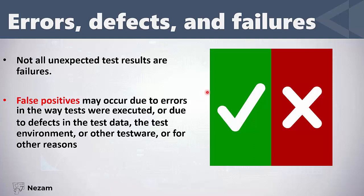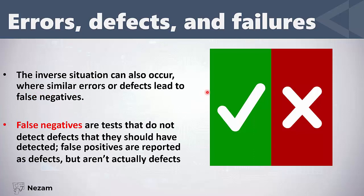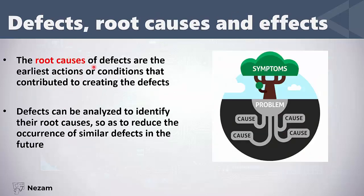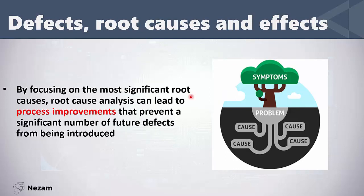On the other hand, there is a false negative — a defect exists but you didn't find it because of a mistake in executing the testing. So: false positive means there is no defect but you detected one due to your mistake; false negative means there is a defect but you didn't find it. The root causes of defects are the earliest actions that caused them. We should analyze defects to find their root causes so they don't happen again, and this root cause analysis leads to process improvements.